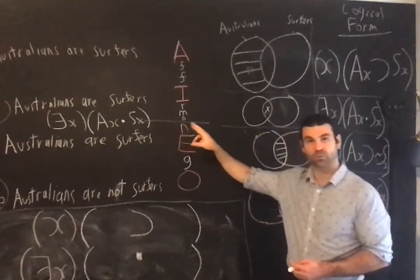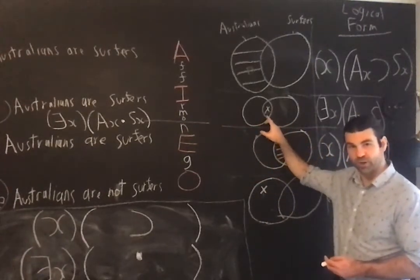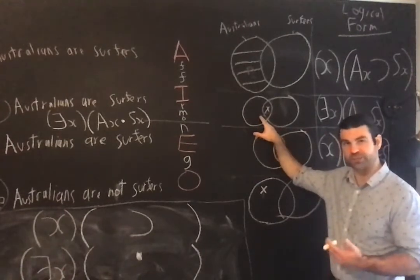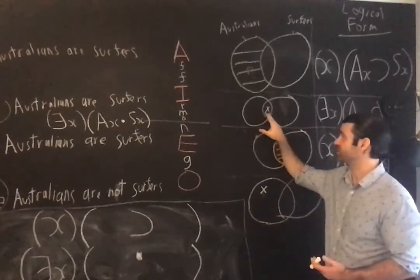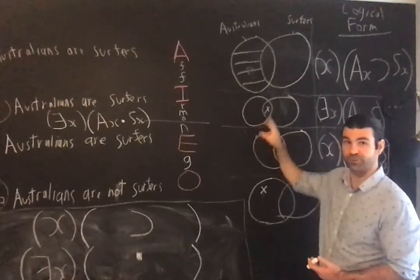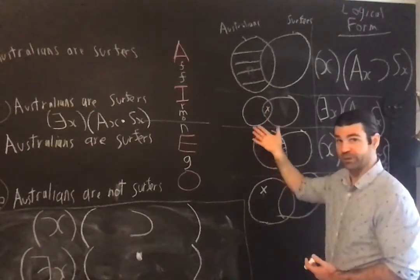Some Australians are surfers—what are you saying? You're saying that there is at least one amongst the Australians that is also a surfer. That's what it is to say some Australians are surfers. There's one in this section that is included in both the subject class and the predicate class. That's a particular inclusion.